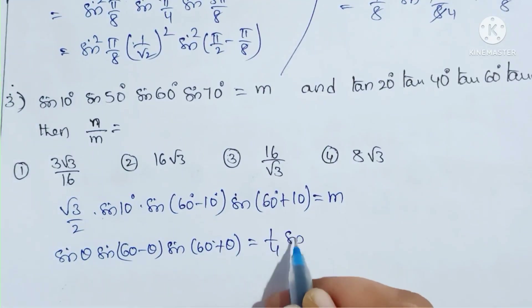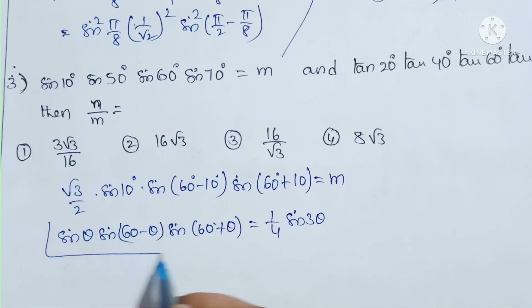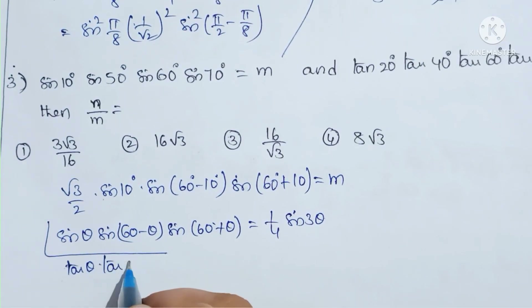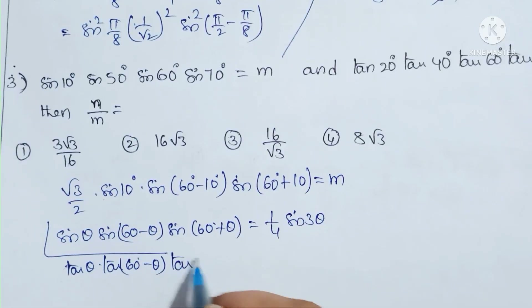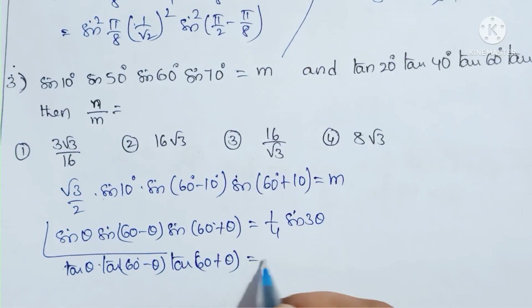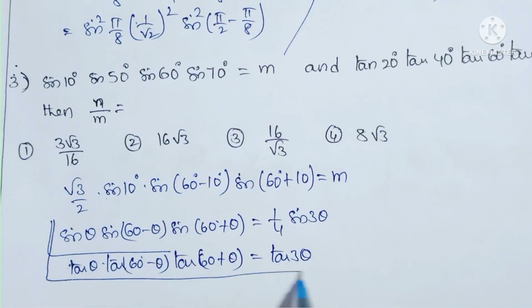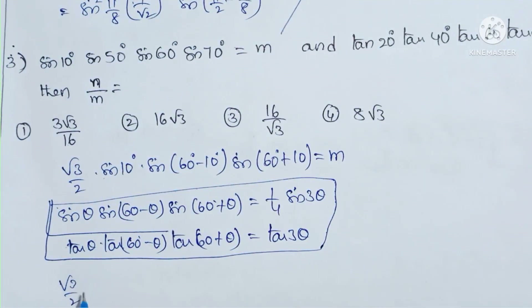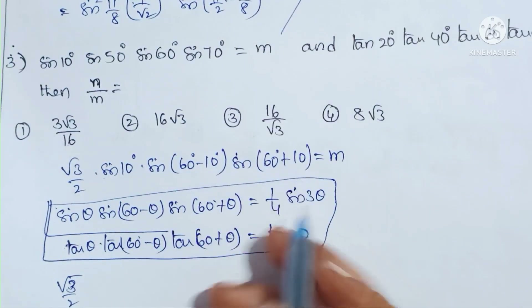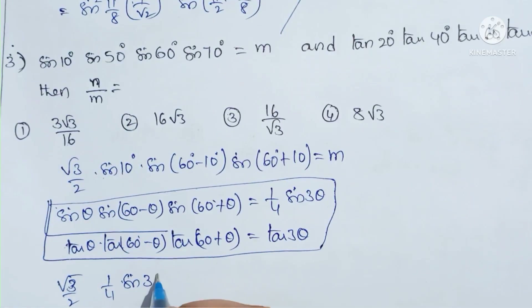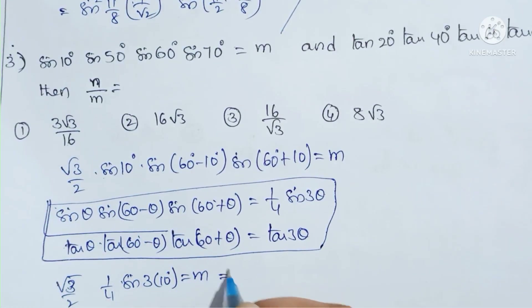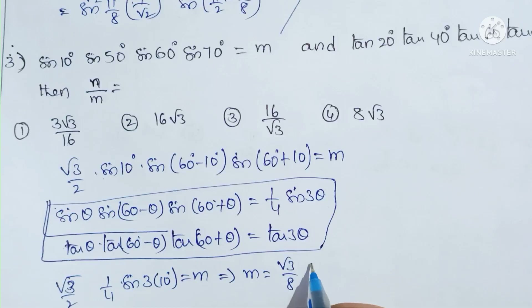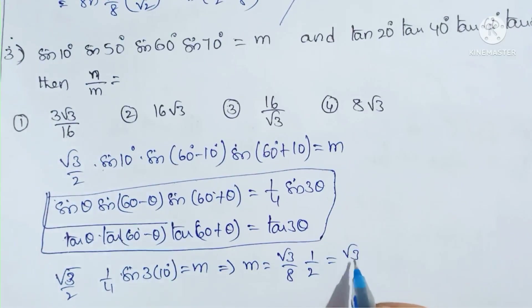So M = (√3/2) × (1/4) × sin(3 × 10°) = (√3/2) × (1/4) × sin(30°) = (√3/2) × (1/4) × (1/2) = √3/16. Therefore M = √3/16.